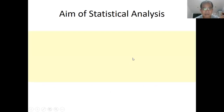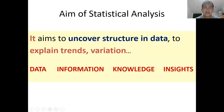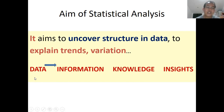What is the aim of statistical analysis? It aims to uncover structure in data, to explain if there is strength, variation, and others. Therefore, statistical analysis starts with data. Once the data has been processed scientifically and statistically, the data will become information. Once the information has been processed, it can be used to produce new knowledge. And once knowledge has been processed, it can produce insights. Not all data can immediately be considered as information — it has to be processed first.